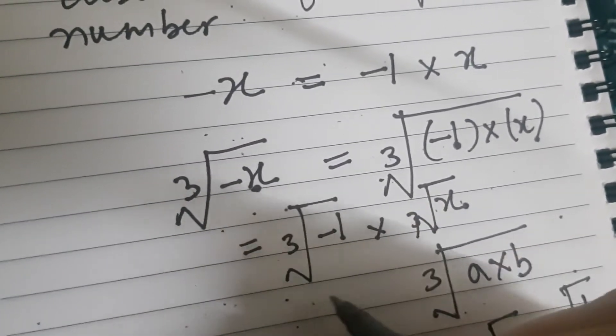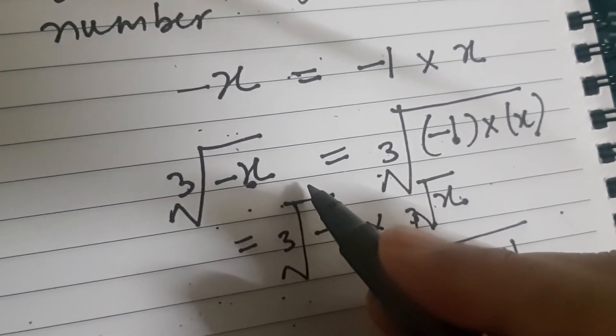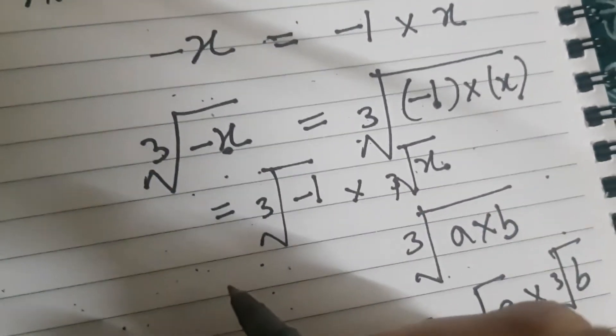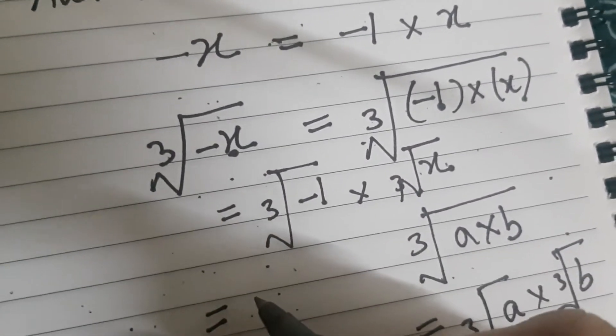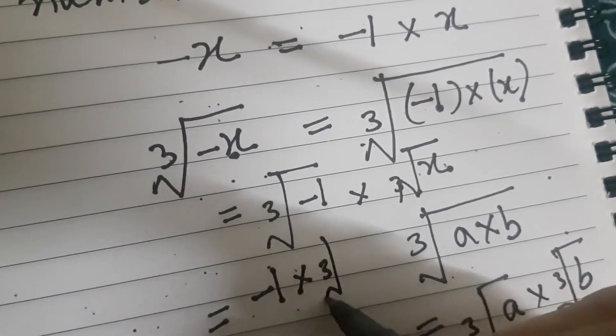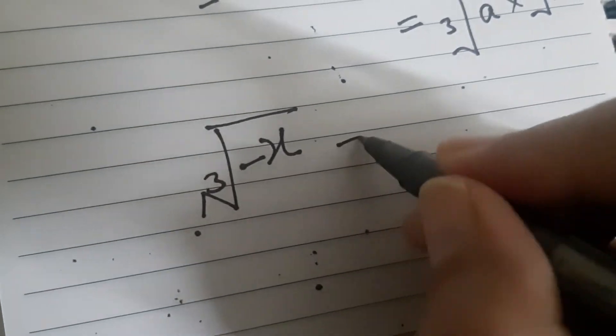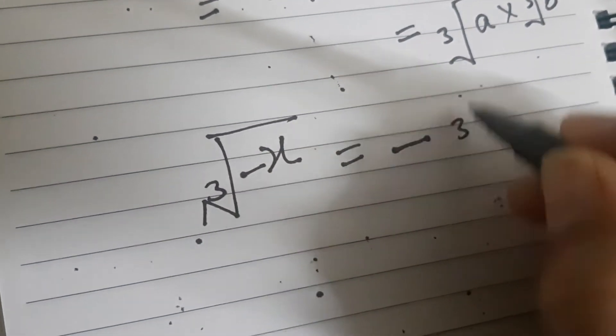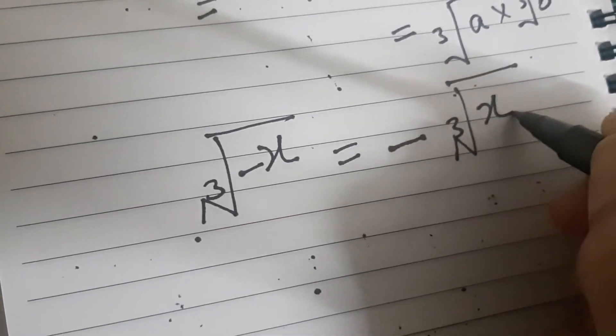Now what is cube root of minus 1? Cube root of minus 1 is minus 1. So this is equal to minus 1 into cube root of x. So always remember, when in examination you are asked to find the cube root of a negative number, you can express this as minus cube root of x.